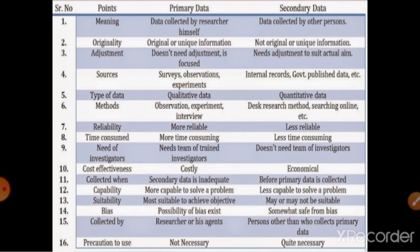Time consumed: more time is consumed in primary data, less in secondary data. Need of investigators: a trained investigator is needed for primary data, whereas secondary data does not require one. Cost: primary data is costly while secondary data is economical. Capability: primary data is more capable of solving a problem; secondary data is less capable. Suitability: secondary data may or may not be suitable for achieving objectives. Bias: primary data has a possibility of bias; secondary data may be safer from bias. Precaution: not necessary in primary data but quite necessary in secondary data.